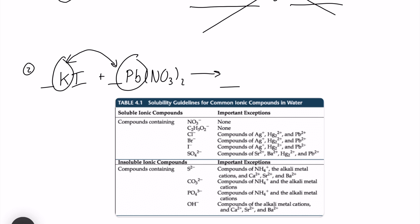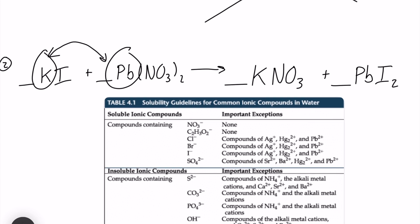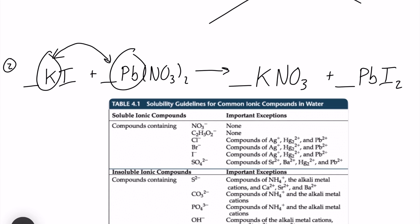So let's go ahead and write out our potential products. First, I'll start with potassium nitrate. So we have KNO3. And our other product will be lead-2 iodide. So we have PbI2. Now let's use this solubility chart to see if we actually have a product here.